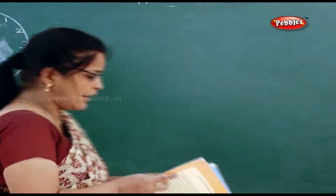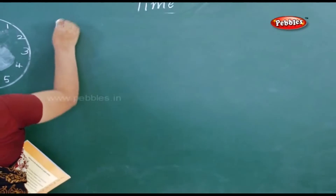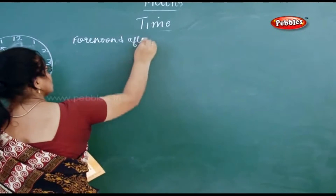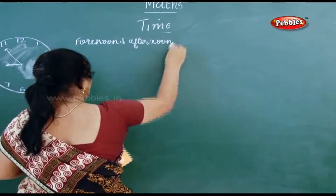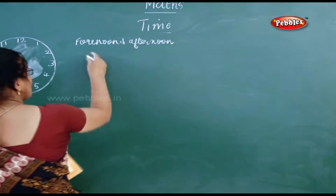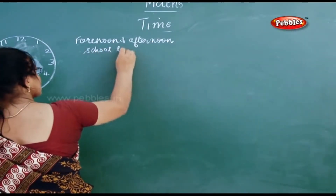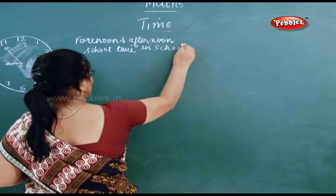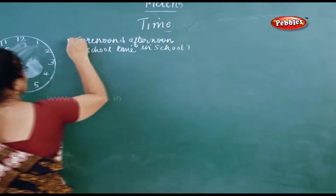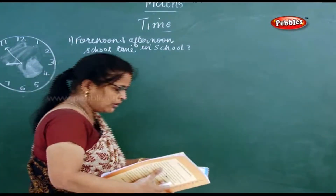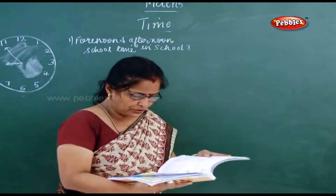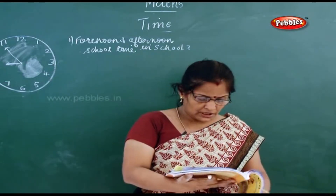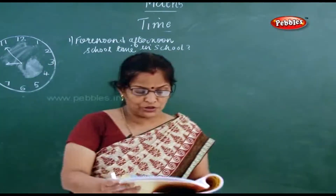The first question is: find the forenoon and afternoon school time in school. You have to find the forenoon and afternoon time in school — that is the first example given in your book. Now what is the forenoon school time? Just look into your schedule.